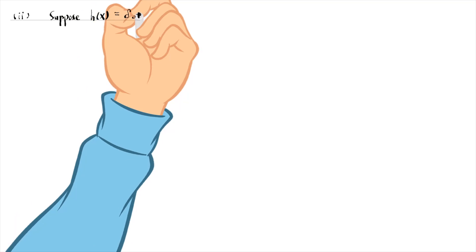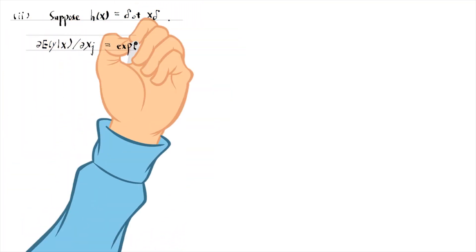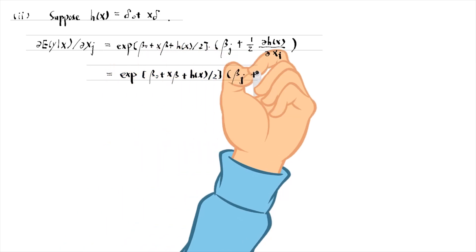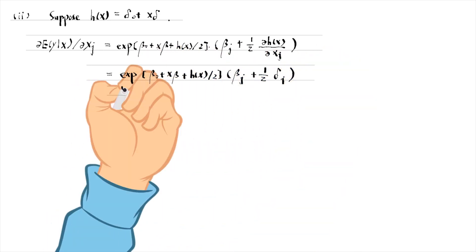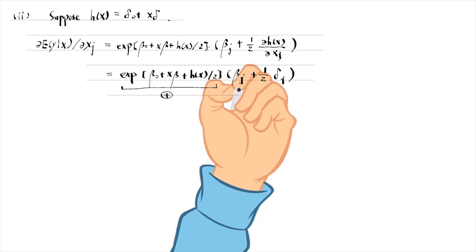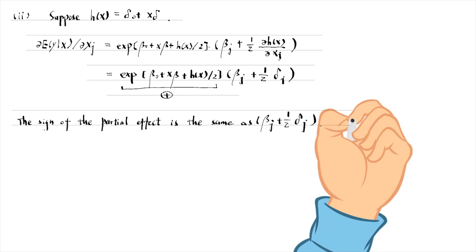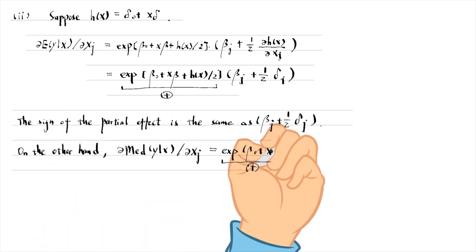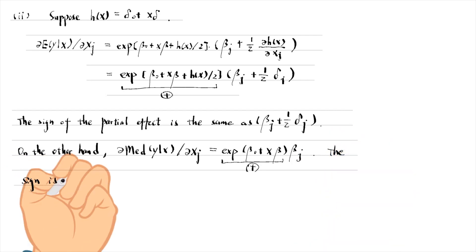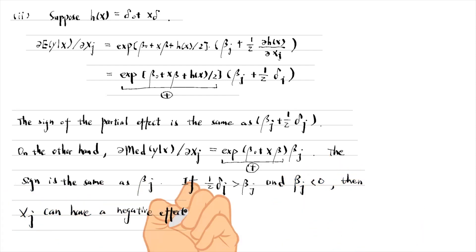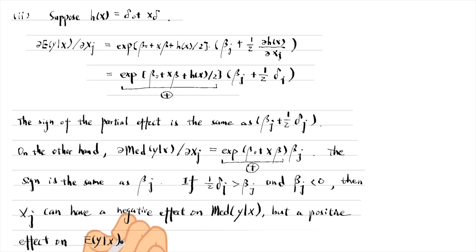For part 2, suppose h is a linear function of x. The partial average effect of xj on y has the same sign as the second term, whereas the partial median effect of xj on y has the same sign as beta j. In the case that beta j is negative and delta j over 2 is greater than beta j, xj can have a negative effect on the median but a positive effect on the mean.